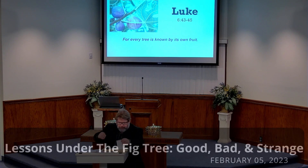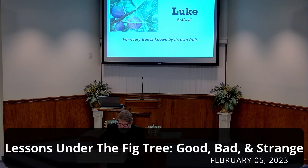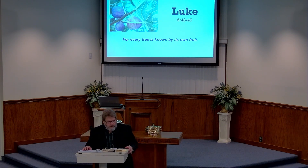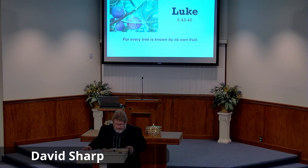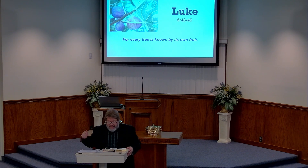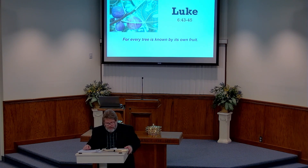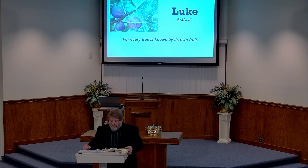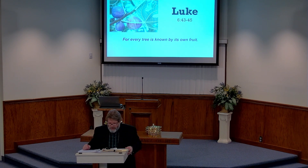Jeremiah 24. Let me read just a preamble part, and then we'll jump right in. In Jeremiah 24, the Lord showed me, Jeremiah, and there were two baskets of figs set before the temple of the Lord after Nebuchadnezzar, king of Babylon, had carried away captive Jeconiah, the son of Jehoiakim, king of Judah, and the princes of Judah, with the craftsmen and the smiths from Jerusalem, and had brought them to Babylon. One basket had very good figs, like the figs that are first ripe, and the other basket had very bad figs which could not be eaten. They were so bad.